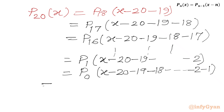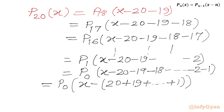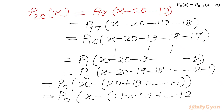We can rewrite this as P₀ of (x minus the sum 1 + 2 + 3 + ... + 20). So P₂₀(x) = P₀(x - (1 + 2 + 3 + ... + 20)). This is an arithmetic progression, and we will find the sum using the standard formula. Let me write here the value for P₂₀.